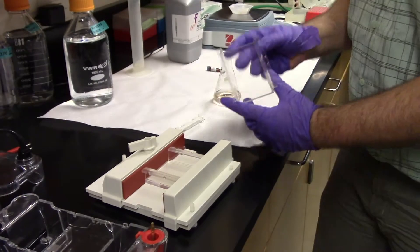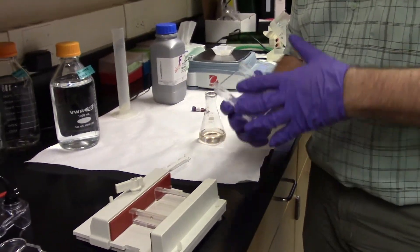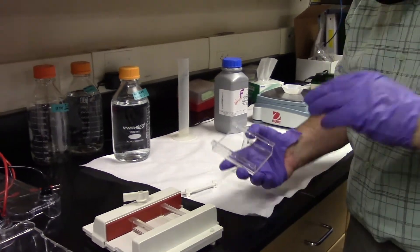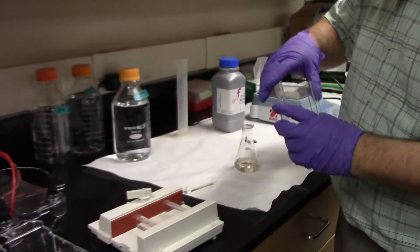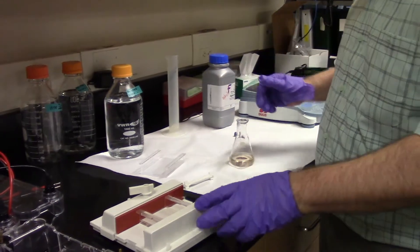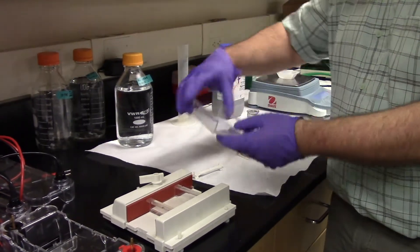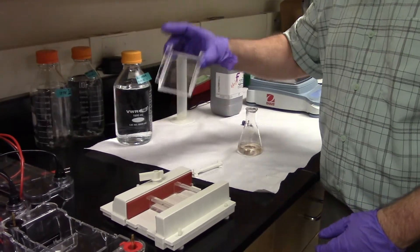If I wanted to make a bigger gel, because I wanted to separate out the sizes of DNA more, a thousand at the top, 500 the middle, 200 at the bottom, I wanted to spread out large pieces of DNA from each other. I could have used maybe 80 mils of this liquid and cast it in a larger gel boat.